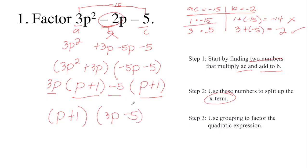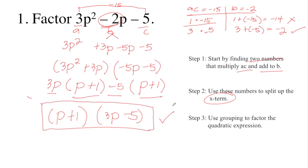Therefore, the factors of 3P squared minus 2P minus 5 are (P + 1)(3P − 5). If you want to check if the answer is correct, you can use FOIL or multiply to see if this is the product.